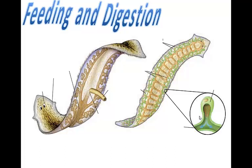Most flatworms are parasitic, living in the bodies of a variety of animals, while others are free-living in marine, freshwater, or moist land habitats. Free-living flatworms feed on dead or slow-moving organisms. They extend a thin tube-like structure called the pharynx out of their mouth. The pharynx releases enzymes that begin the digestion of prey, and the food particles are then sucked into the digestive tract where digestion continues.